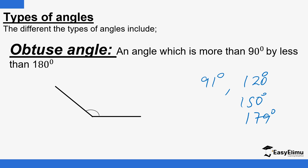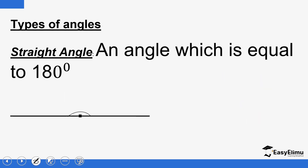As you kept widening the space between the two intersecting lines, you finally reach an angle of 180 degrees. At that point it is called a straight angle.